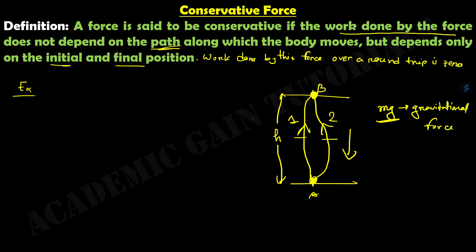It only depends on the vertical height from the ground. So whether we take this object from A to B along path 1 or path 2, it does not depend on which path we take — it only depends on the height, from which point to which point we move it in terms of vertical height. Work done along each of the paths is the same.